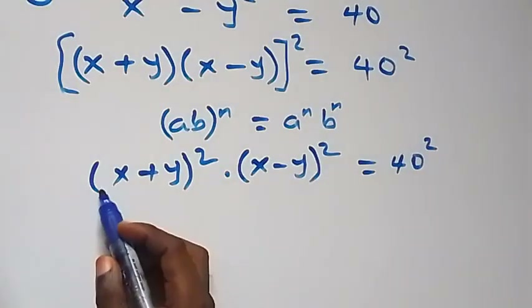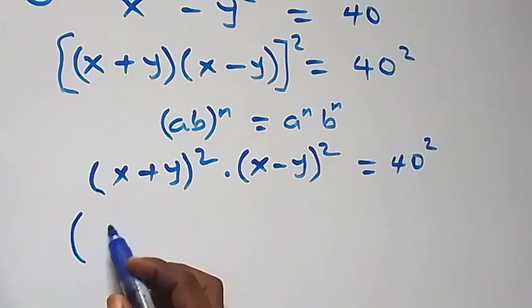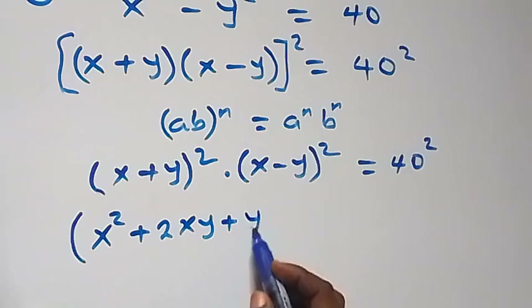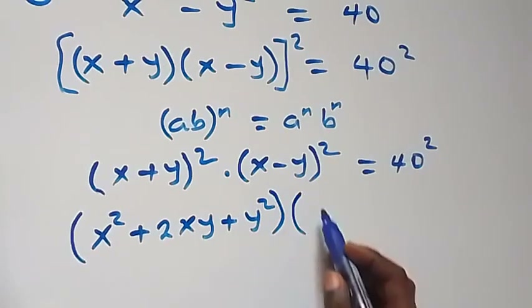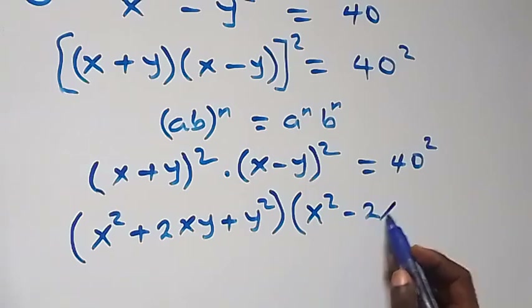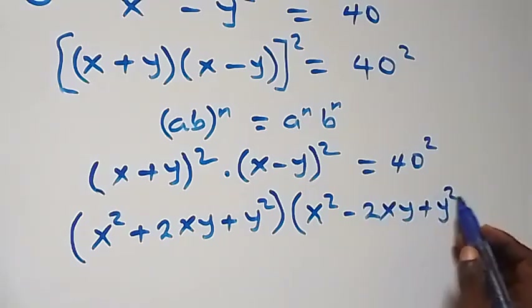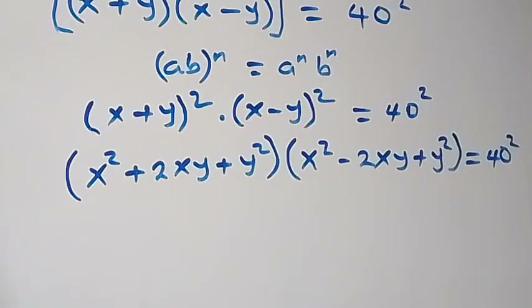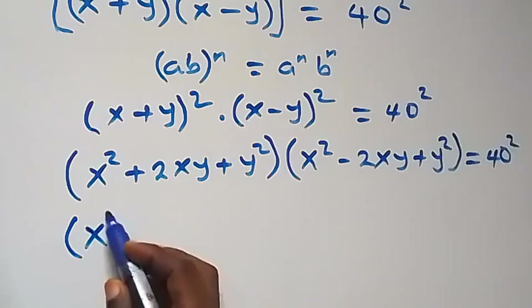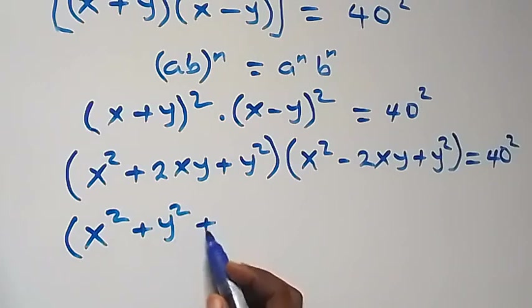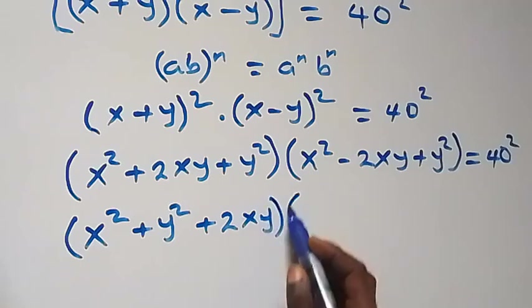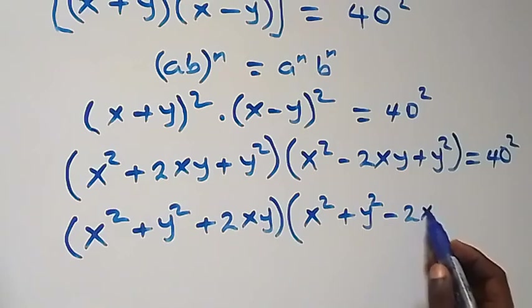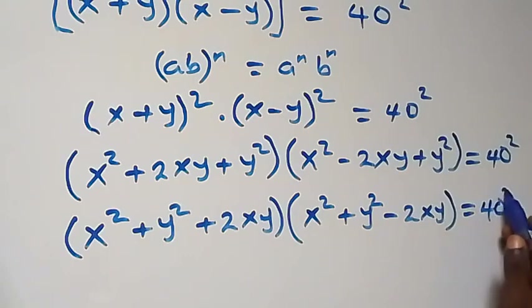The next step, we expand each bracket. The first bracket gives us x squared plus 2xy plus y squared. The second bracket when expanded gives us x squared minus 2xy plus y squared. So altogether this equals 40 squared.